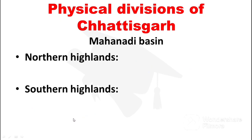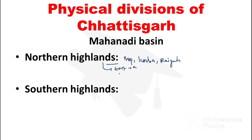Next we will see Northern and Southern Highlands. Northern Highlands covers Bilaspur, Korwa, and Raigarh. On the east side are Raigarh Plains, and on the west side is Hasdeo-Rampur. In Southern Highlands, similarly, Durg, Mohla, Manapur, and Ambagarh Chowki highlands are covered.